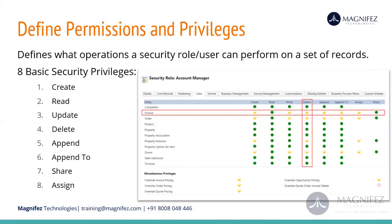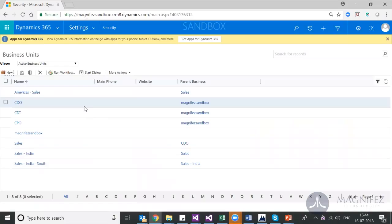Append and append to will definitely be something new to some of you. If I need to link a contact record to an account record, I need these two privileges: I need the append privilege on the account, and then I need the append to privilege on the contact record. Similarly, if I need to add a note to an account record, I need the same thing. Simply put, if you need to link two records together, there needs to be a relationship already built between those two entities at the entity level.